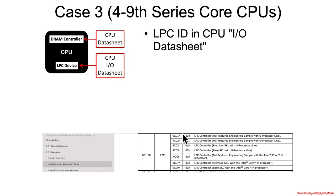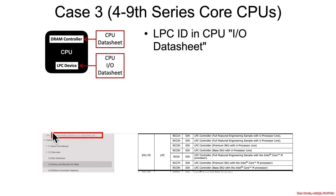If instead my table on the website says that you have a 4 through 9 series core CPU, it basically means your LPC device has been merged into your CPU data sheets. Specifically there will be what's called a CPU IO data sheet — for example, on the 5th generation core series there's an IO data sheet. So for 4 through 9 series core CPUs, there will be an IO data sheet to confirm that the LPC device has the particular device ID that you look up.